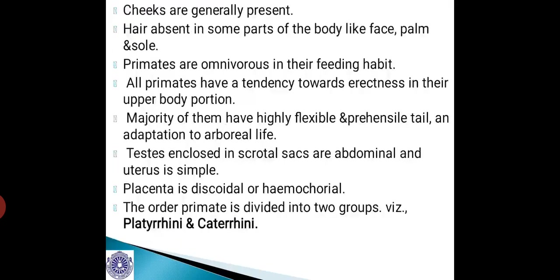Cheeks are generally present. Hair is absent in some parts of the body like the face, palm and sole. Primates are omnivorous in their feeding habit. All primates have a tendency towards erectness in their upper body — though some are quadrupedal, they can raise the upper part of the body at times. Majority have a highly flexible and prehensile tail and adaptation to arboreal life. The testis is enclosed in scrotal sacs, which are abdominal, and the uterus is simple. Placenta is discoidal or haemochorial type.